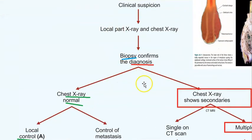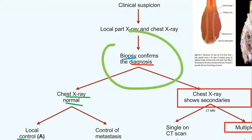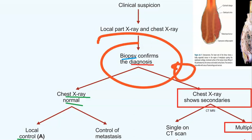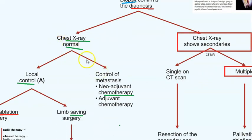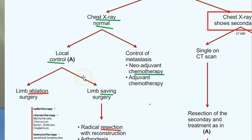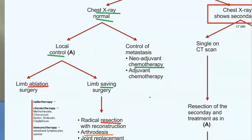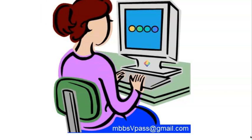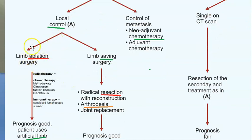Once the diagnosis of osteosarcoma is confirmed, check the chest X-ray that was ordered. If the chest X-ray is normal, that means there is no metastasis, so you treat the local bone site. You can do ablation surgery - removing whatever is there locally. Treatment options include radiotherapy, chemotherapy, or immunotherapy.